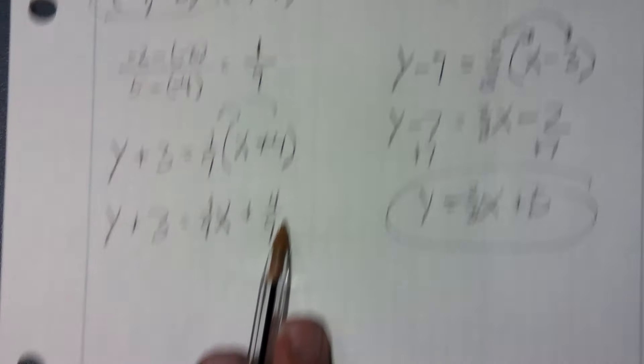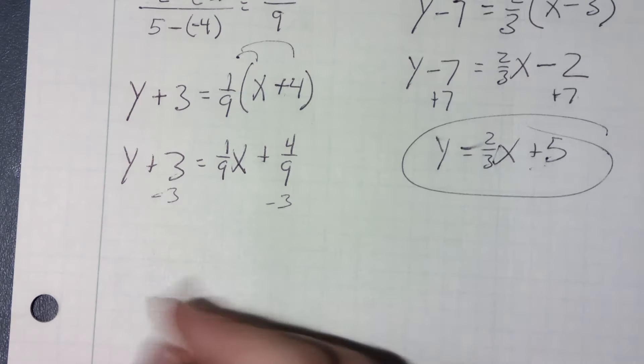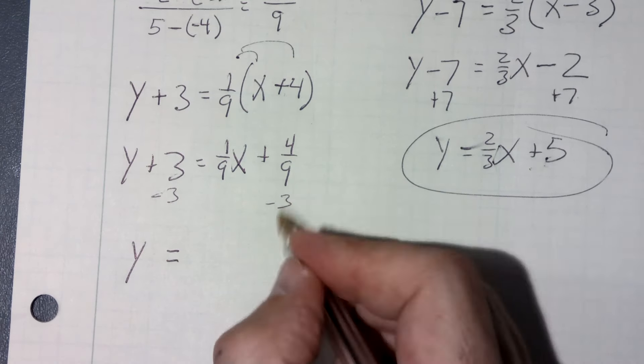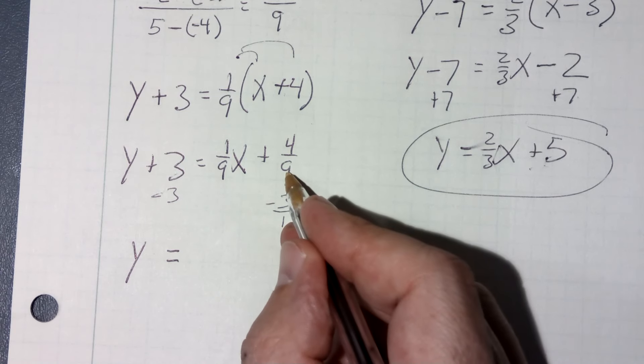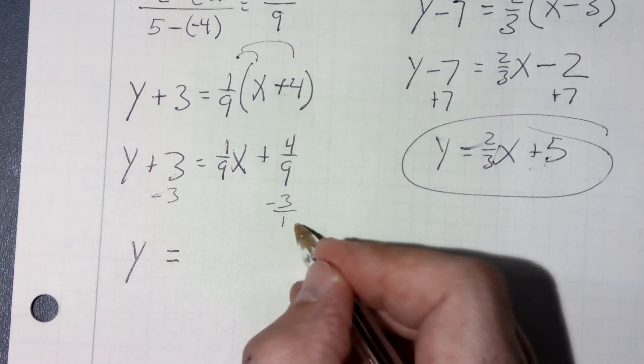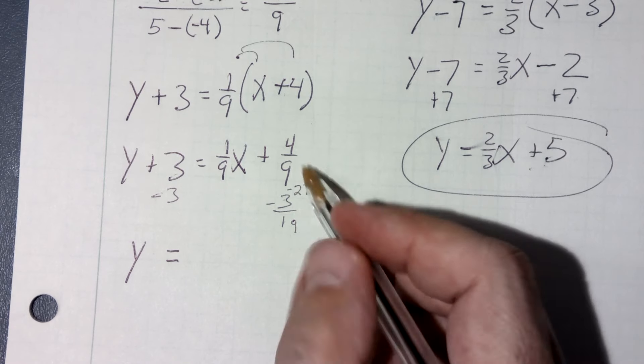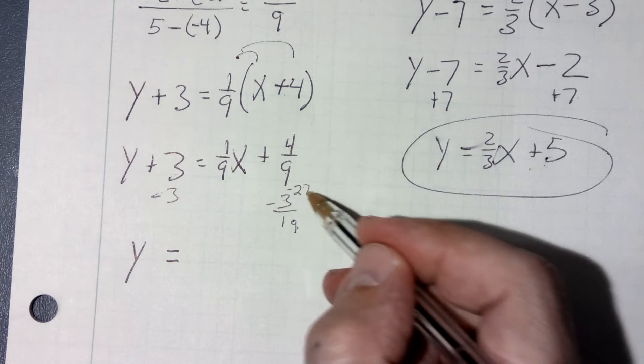The last step is I'm going to minus three from both sides. Now in order to do that, I'm going to have to get a common denominator because it's negative three over one common denominator of nine. Well, I'm going to times by nine times by nine. That's going to be 27. And remember, I'm minusing this off. So I'm four minus 27 ninths, four ninths minus 27 ninths.